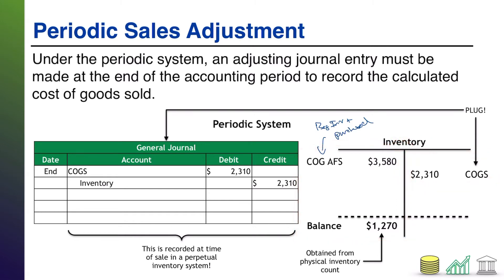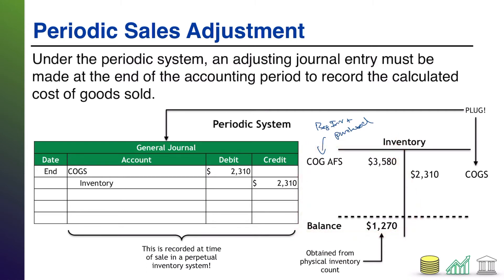One thing you might also be thinking is: that's a pretty broad assumption to say that the difference between what you had available for sale and your ending balance must have sold. What if it got damaged? What if it got stolen? Any of those things could have happened, but that's still all considered simply a cost of selling the good. You're going to have breakage, you're going to have theft, but all of that is just part of the cost of doing business in this merchandise. And therefore, it is still appropriate to simply record that as cost of goods sold, even though technically some portion of it may not have literally sold to a customer.